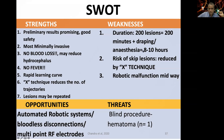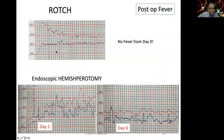By introducing modifications like the X technique we reduce trajectories and lesions. Weaknesses include: long surgical duration, risk of skip lesions (mitigated by X technique), and potential for robotic malfunction mid-procedure. Opportunities: this is the start of a new technology, giving plenty of room for automated robotic systems, bloodless disconnections, and multi-point RF electrodes. Threats: it's a blind procedure with risk of hematoma as seen in one case — but thermocoagulation is a very safe procedure with thousands of cases in the literature.